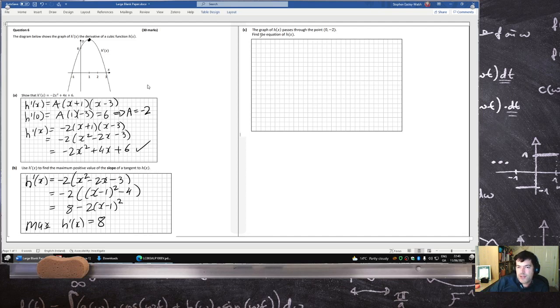The graph of h(x) passes through a given point. Find the equation of h. Okay, so h is the integration of minus 2x squared plus 4x plus 6, which would be minus 2x cubed over 3 plus 2x squared plus 6x plus c. The c has to be minus 2, because when x is 0, we're supposed to get minus 2.